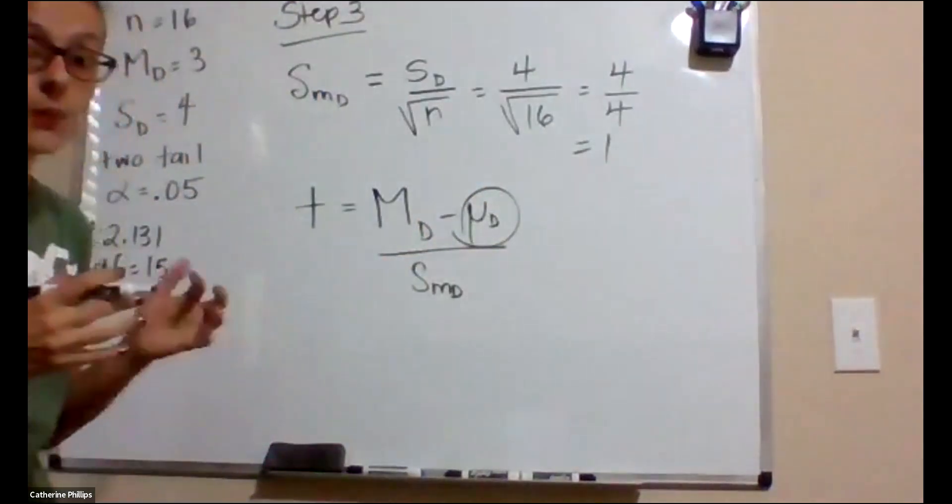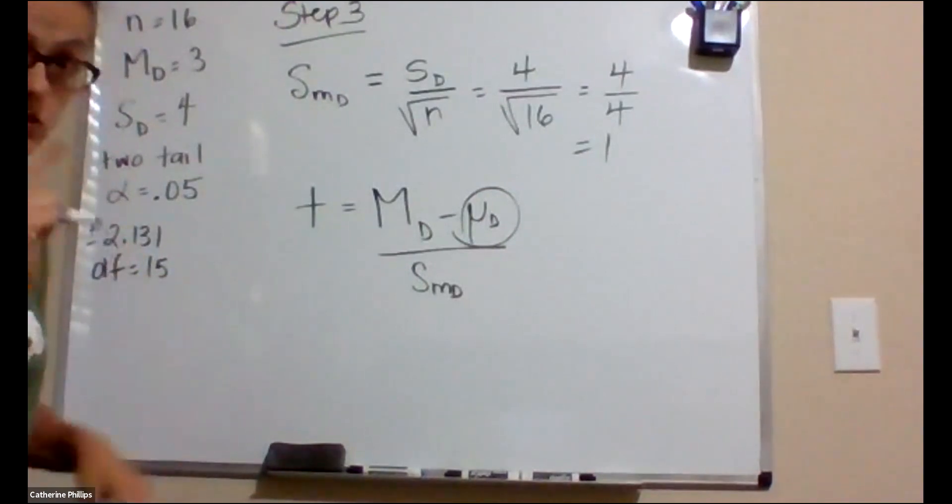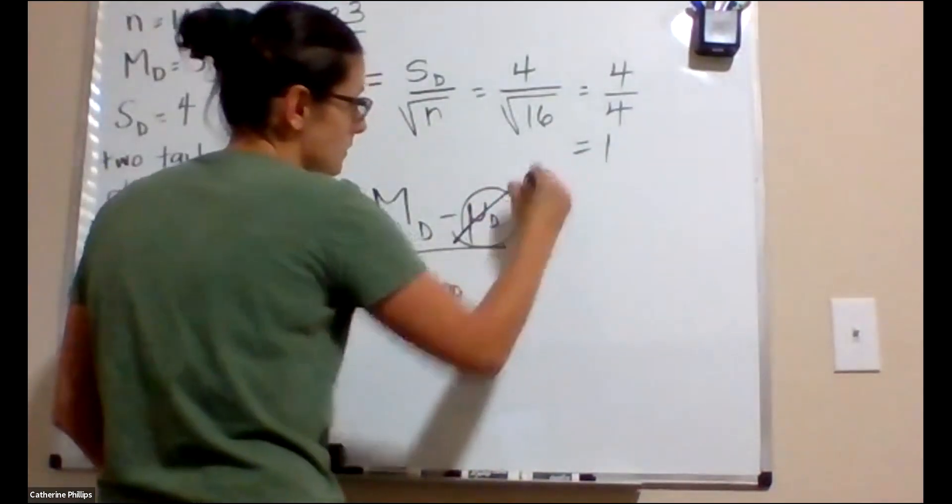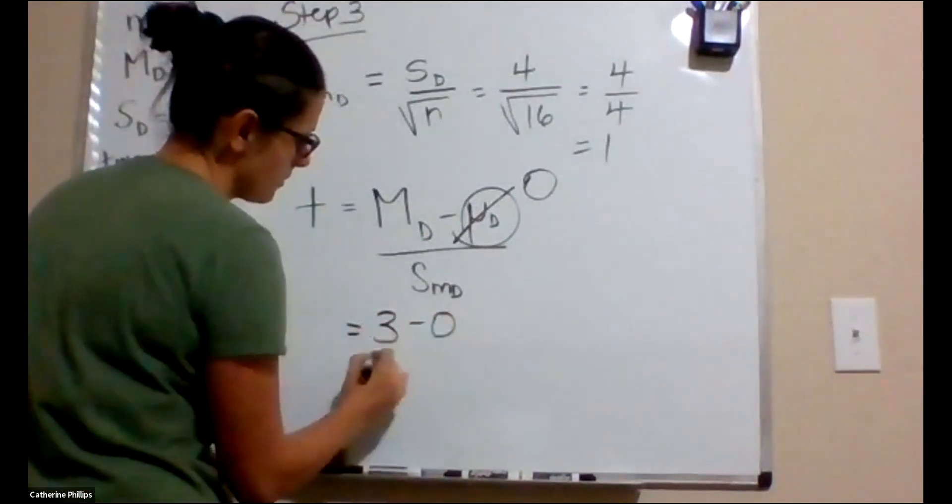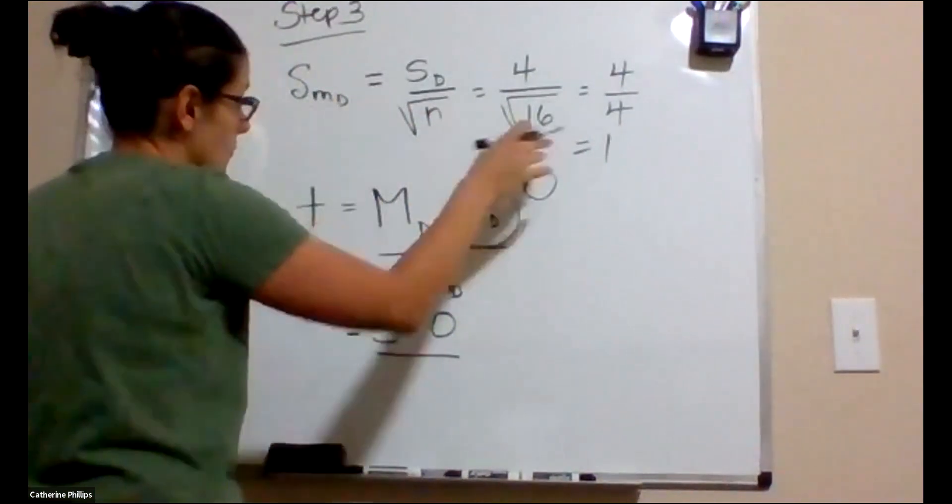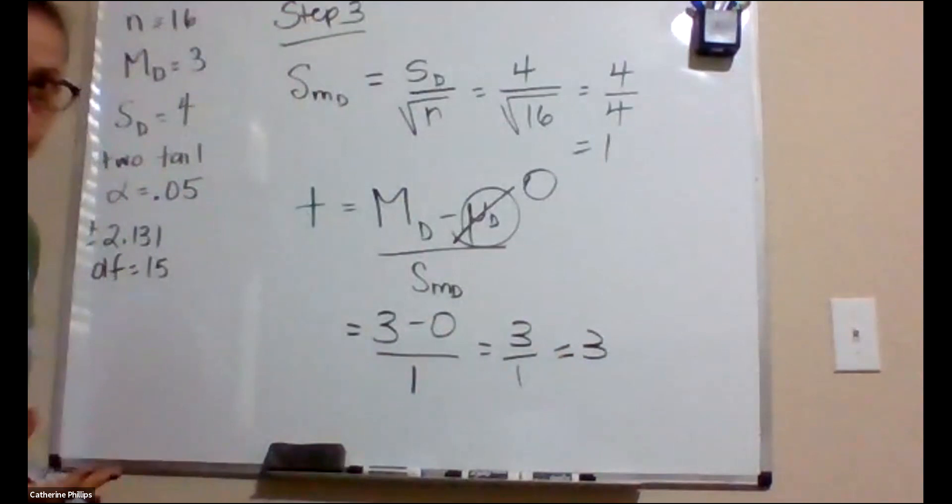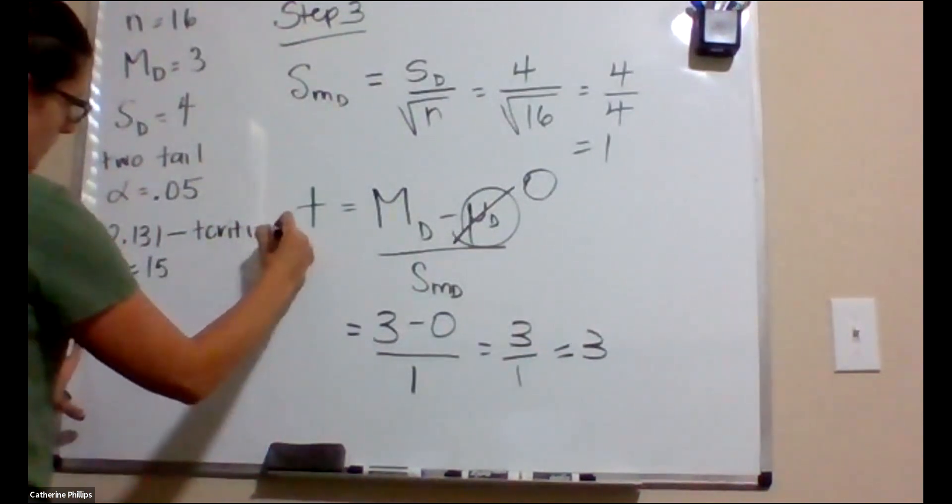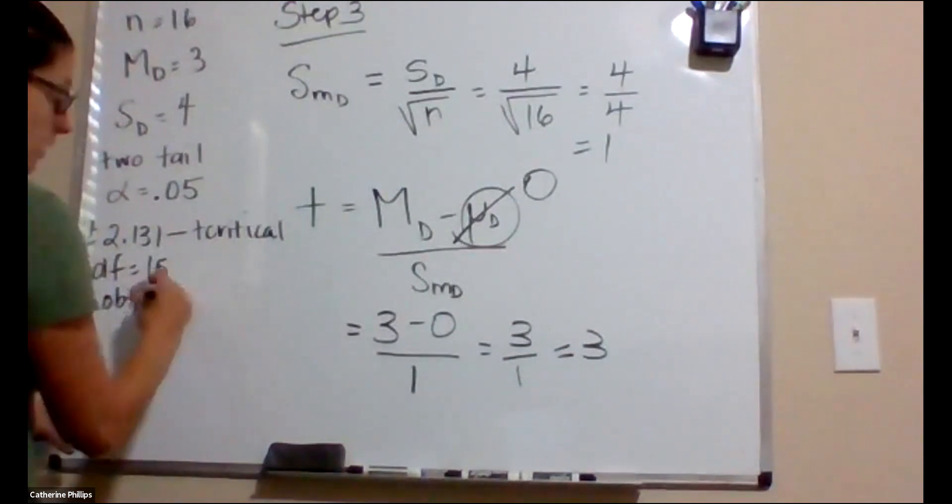Now we can take this estimated standard error and plug it into our t. This value, the difference that we expect if the null is true, because the test statistic is always about whether or not the null is true. We make a decision about the null. We reject or fail to reject the null hypothesis. If the null is true, the expected difference is 0. So what we're going to do, the mean difference that was observed is 3, 3 subtract 0 divided by the estimated standard error. So this is up here, 2.131. That was t critical. That was our critical values. Our t obtained or calculated is 3.